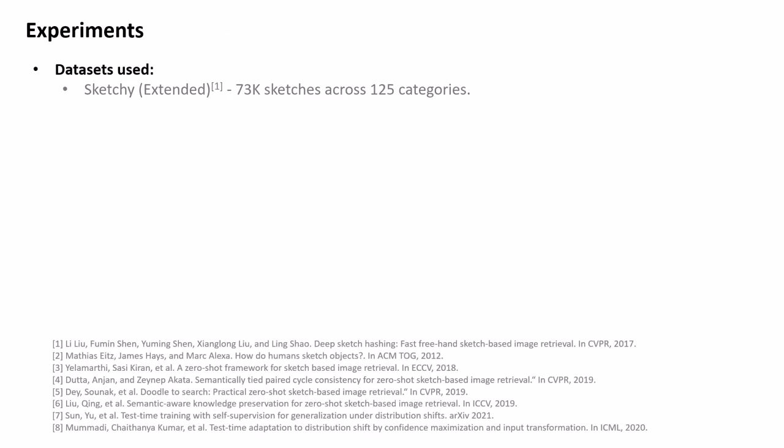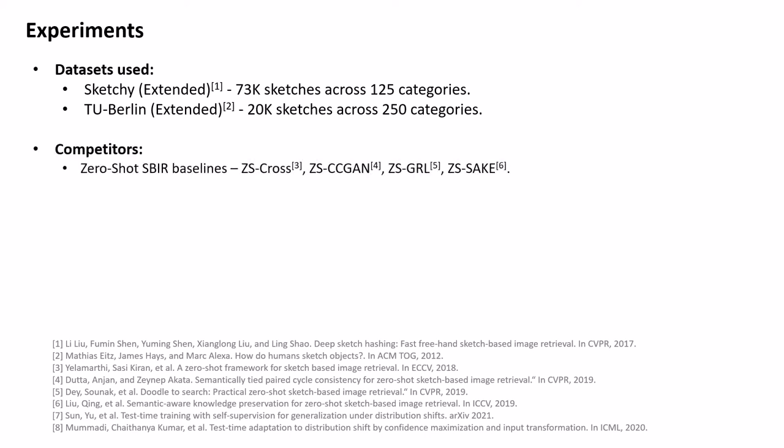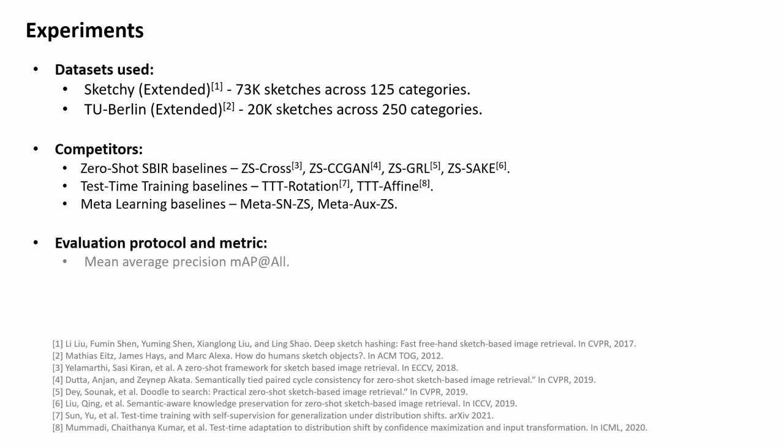We evaluate our sketch 3T framework on the popular Sketchy and TU-Berlin datasets, which are large collections of photo-sketch pairs. We compare our method against the state-of-the-art zero-shot SBIR methods. We also adapt test-time training methods in context of SBIR, as well as design a few meta-learning baselines for a fairer evaluation. The performance of the model is measured using mean average precision and precision across top 200 retrievals.